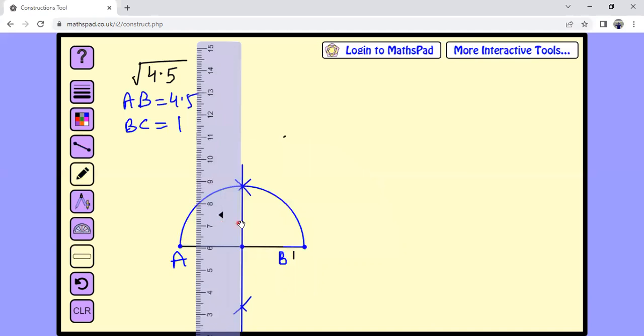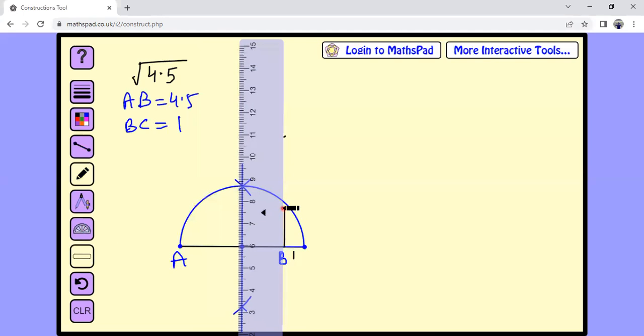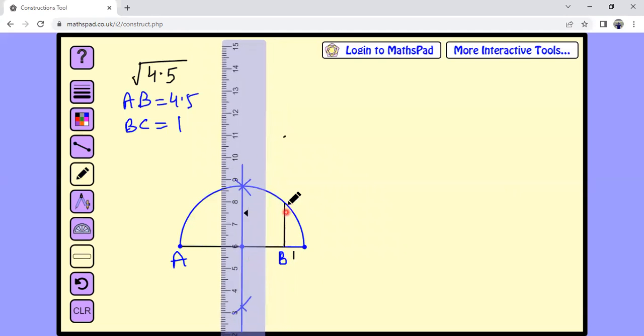Now we would like to draw... We'd like to join B and this point, wherever they intersect. Look, this is passing through B, of course. You see passing through that point as well. So we can draw this line.